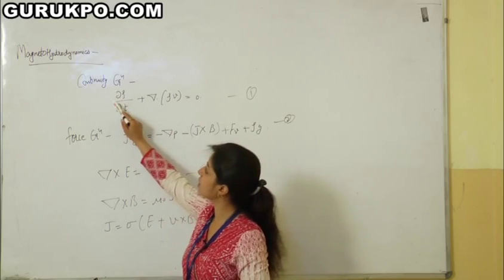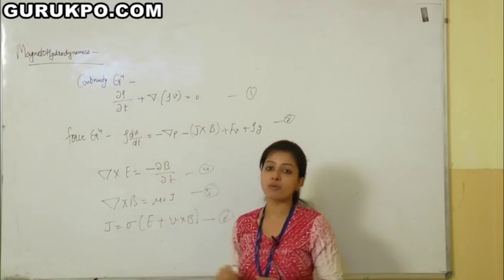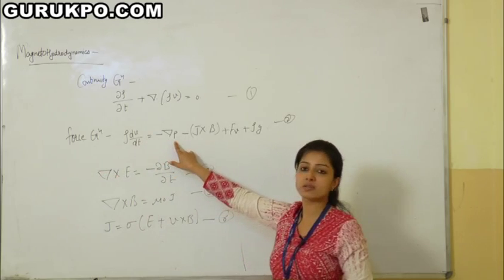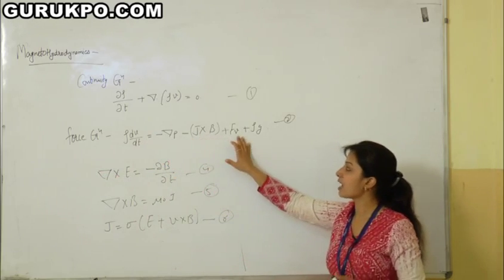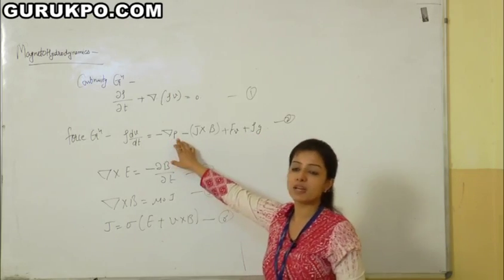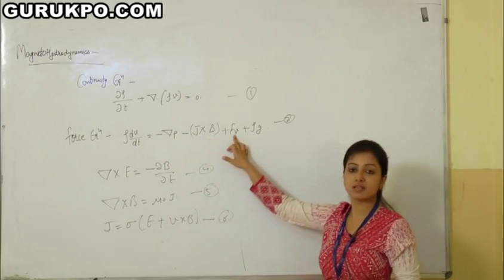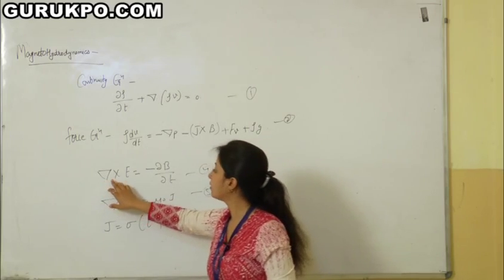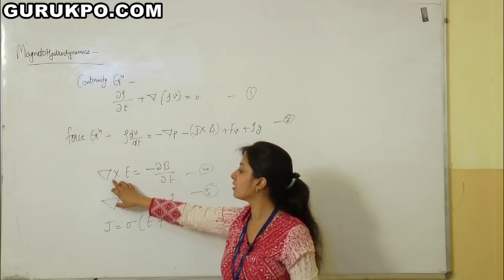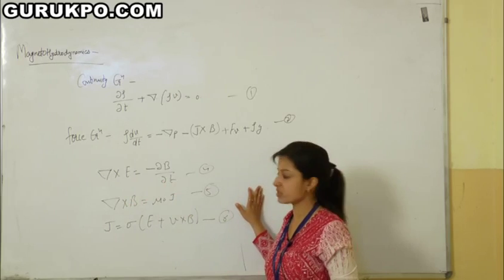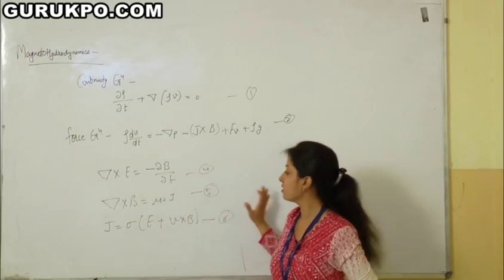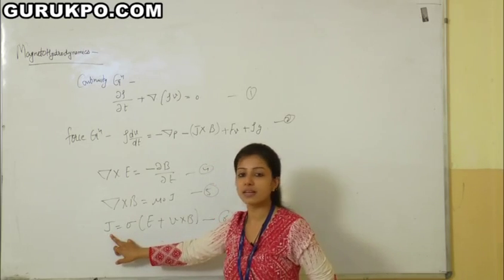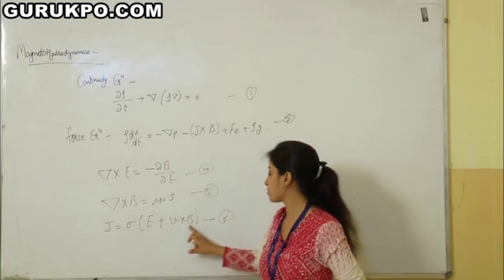The continuity equation is del·rho/del·t plus divergence of (rho·v) equals 0. The force equation is rho·dv/dt equals minus gradient p minus j×B plus f_v plus rho·g, where gradient p is the pressure force, j×B is the magnetic force, f_v is the viscous force, and rho·g is the gravitational force. The electromagnetic field equations are: curl E equals minus del·B/del·t, and curl B equals mu_0·j. For a one-component conducting fluid, Ohm's law takes the form j equals sigma(E plus v×B).